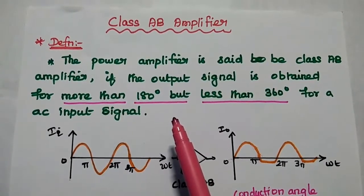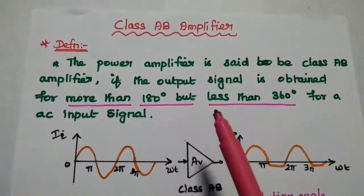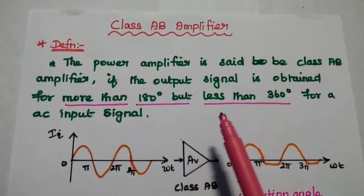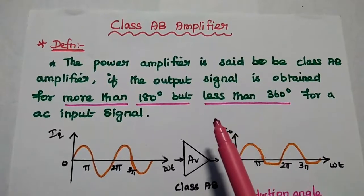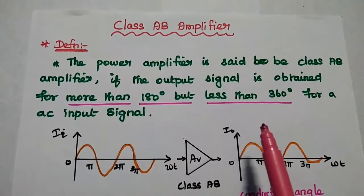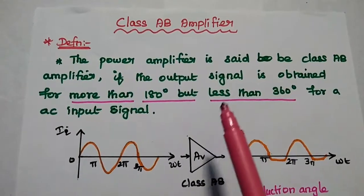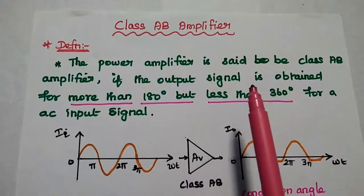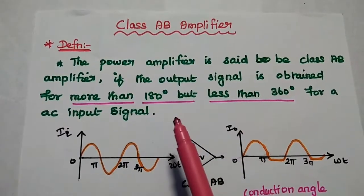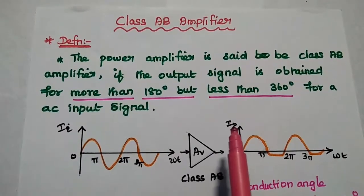Now we are going to discuss Class AB amplifier in detail. In Class AB amplifier, the transistor operates between the two extremes called Class A and Class B amplifiers. That means the transistor is on for more than 180 degrees but less than 360 degrees for a given AC input signal. The power amplifier is said to be Class AB if the output signal is obtained for more than 180 degrees but less than 360 degrees for a full cycle of AC input signal.